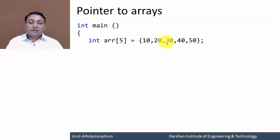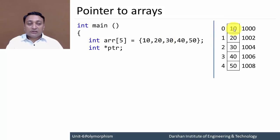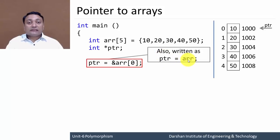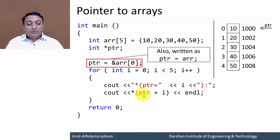Next let us discuss pointer to arrays. I have one array with initialized values 10, 20, 30, and so on. In the backend it will occupy 5 memory blocks with some address, and indexing starts from 0 to 4. I have created one pointer variable. To point this array I write pointer = &array[0], so address 1000 is stored in pointer and pointer points to the 0th element. You can also write pointer = array — writing just the array name refers to the address of the very first element. Both statements are equivalent.